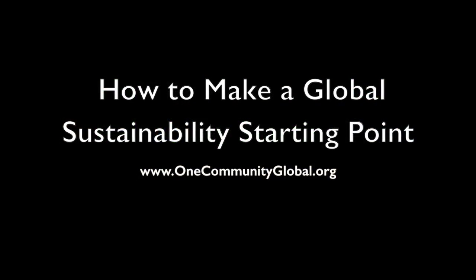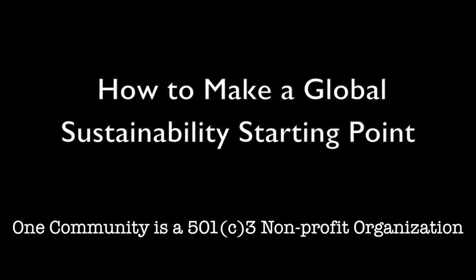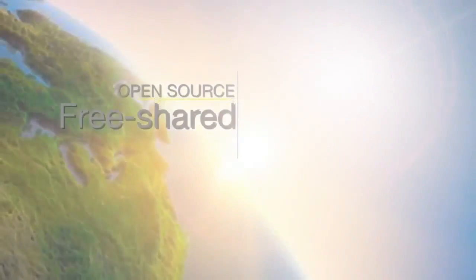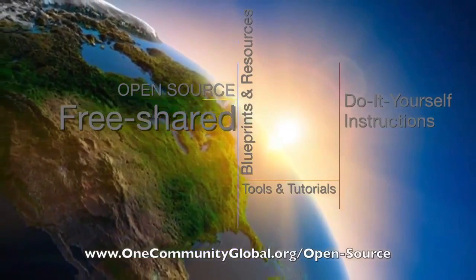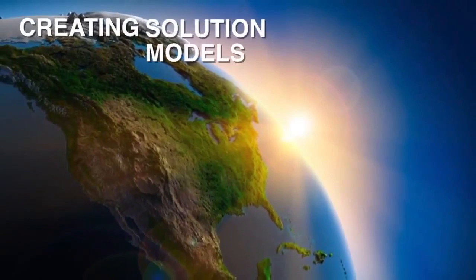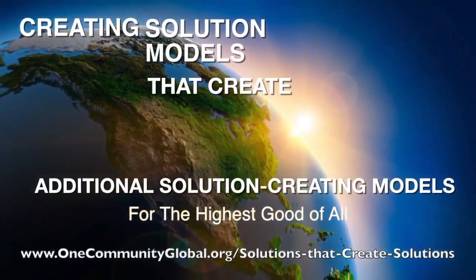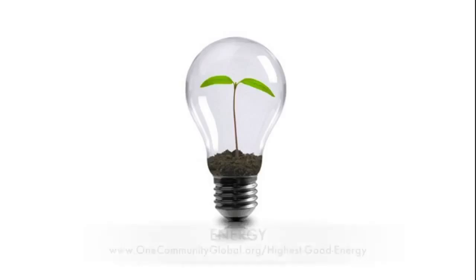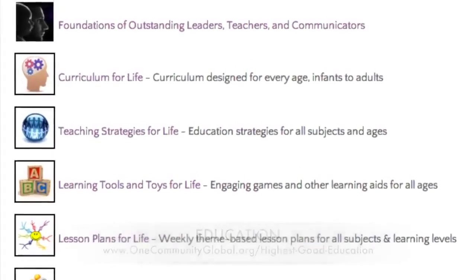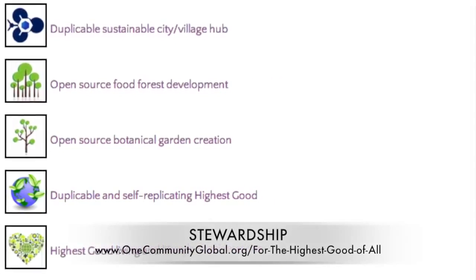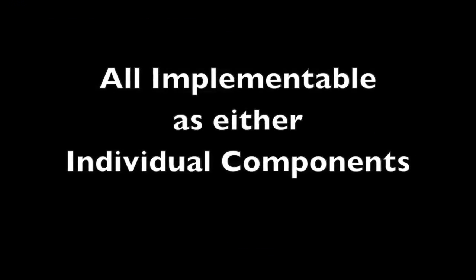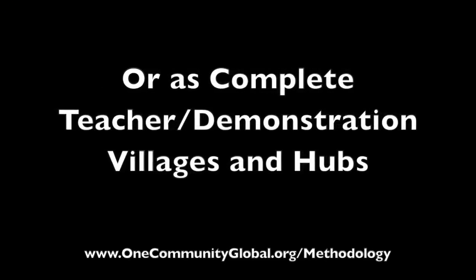How to make a global sustainability starting point. One Community weekly progress update number 181. One Community is a 501c3 non-profit organization creating open source and free shared blueprints, resources, tools, tutorials, and do-it-yourself instructions for highest good living — creating solution models that create additional solution-creating models in the service of all life on this planet. We are creating all these things to be implementable as either individual components or as complete teacher demonstration villages and hubs.